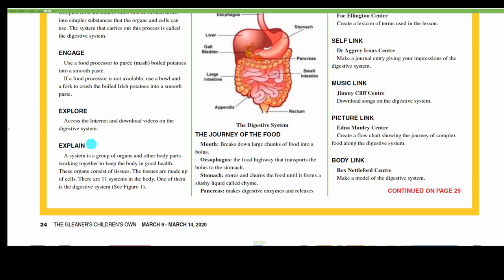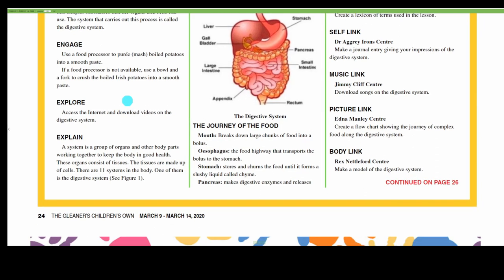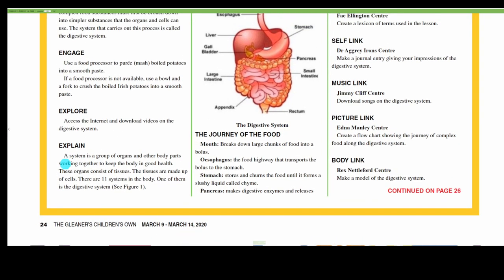Explore. Access the internet and download videos on the digestive system. Explain. A system is a group of organs and other body parts working together to keep your body in good health. These organs consist of tissues. The tissues are made up of cells. There are 11 systems in the body, and one of them is the digestive system, and we can see that in figure one.